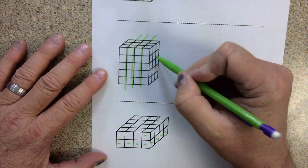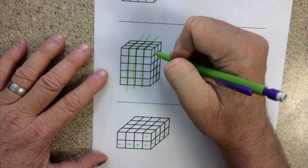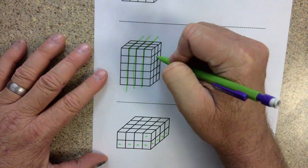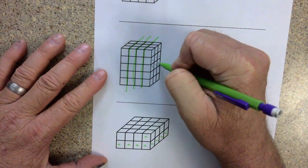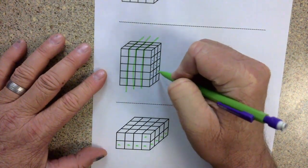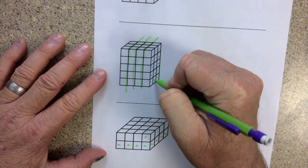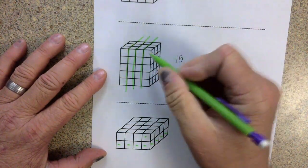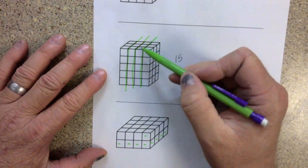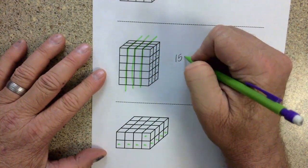In this case, we would look at this layer. So that would be 1, 2, 3, 4, 5, 6, 7, 8, 9, 10, 11, 12, 13, 14, 15 cubes in that slice. And there are 1, 2, 3, 4 slices.